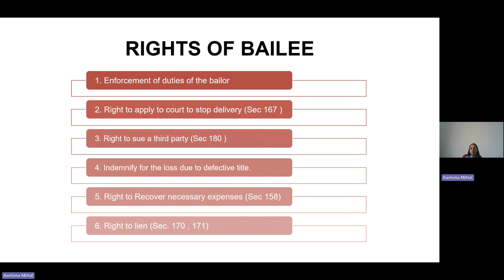The third right is the right to sue a third party. If A gives his car to B for some repair, and C — a third party — creates any issue for B while doing the repair services, B has the right to sue C. If any third party creates any issue for the bailee while accomplishing the purpose, the bailee has the right to sue them. This right is available for both the bailee and the bailor.